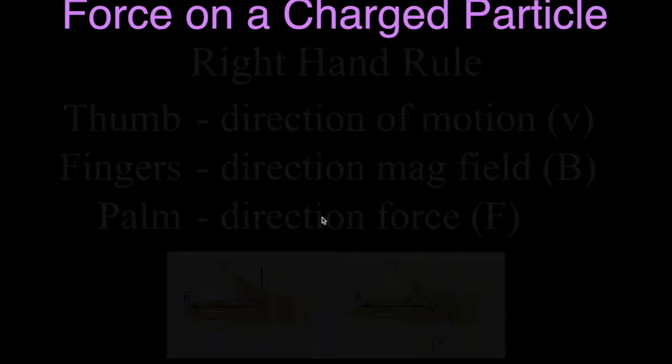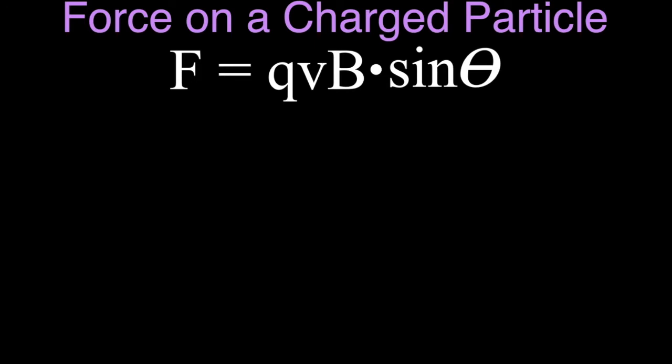Now let me go through the equation briefly. This is the equation we use to calculate the force on a charged particle moving through a magnetic field. The force depends on: Q, the charge of the particle; V, the velocity — which means the particle has to be moving; and B, the magnetic field strength — you have to have a magnetic field to have a magnetic force on a charged particle.